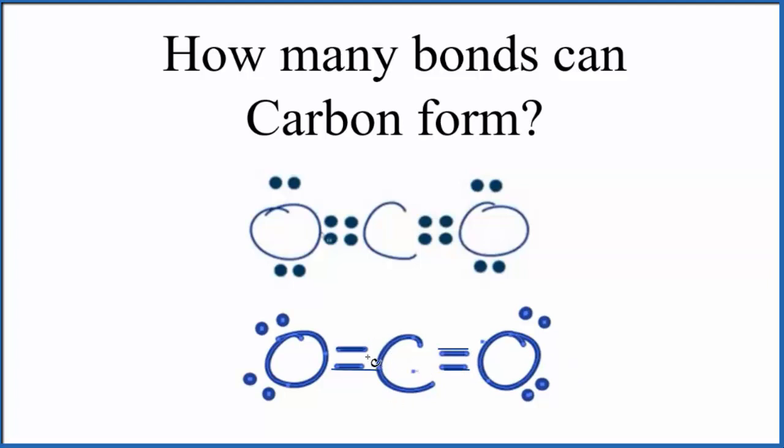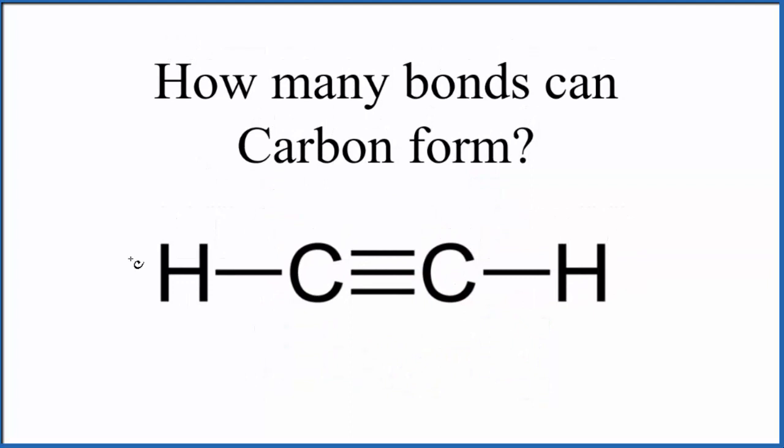Carbon again, it can have four bonds, can have double bonds, can even have a triple bond. This is acetylene, and we can see carbon here: one, two, three, four. This carbon here: one, two, three, four. So carbon forms four covalent bonds.